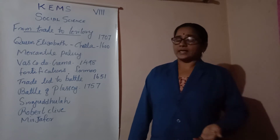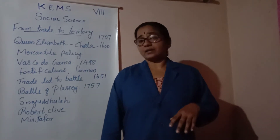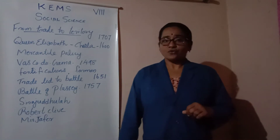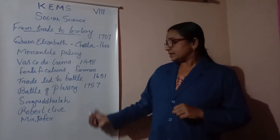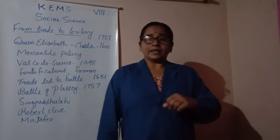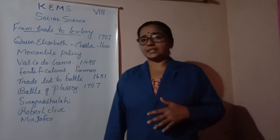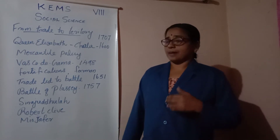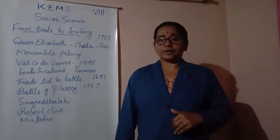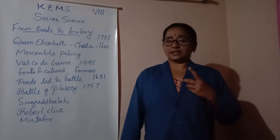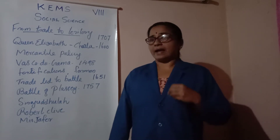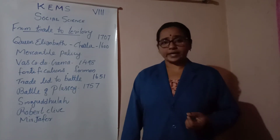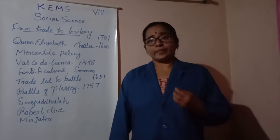They demanded more and more concessions, like the issuance of a Firman — a royal order. They demanded the Mughal ruler Farrukhsiyar to issue a Firman. The rulers of Bengal, powerful Nawabs like Murshid Quli Khan, Alivardi Khan, and Siraj ud-Daulah, were denied to grant concessions to the company. They denied the right to mint coins, asked the company to stop fortifications, and to pay taxes.